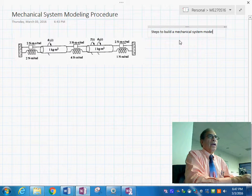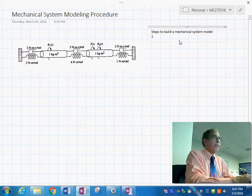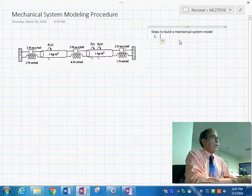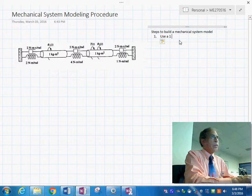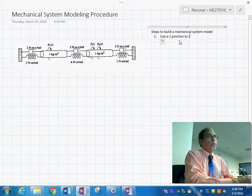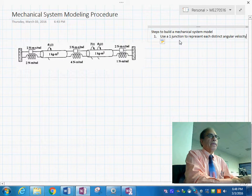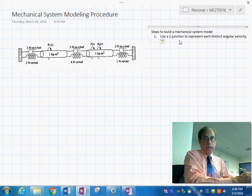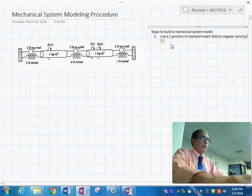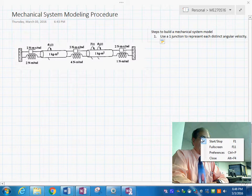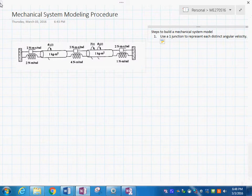So I am going to write down what I would call steps to build a mechanical system model. Step number one is going to be to use a one junction to represent each distinct angular velocity. Let me disappear from here so we have more space and you look at more interesting things than me.